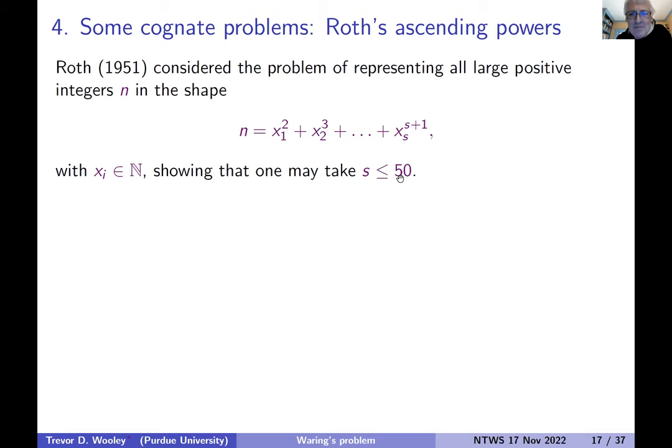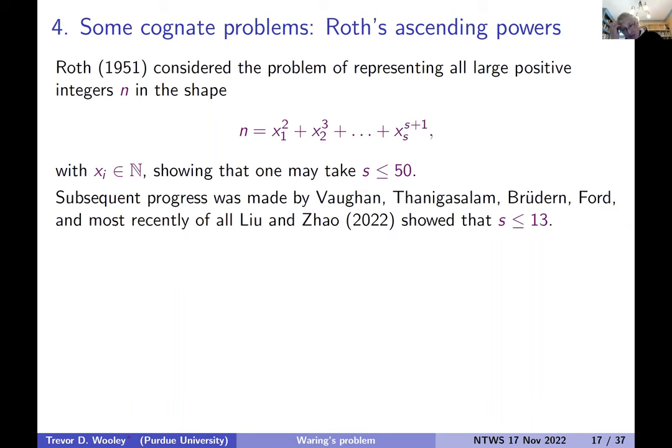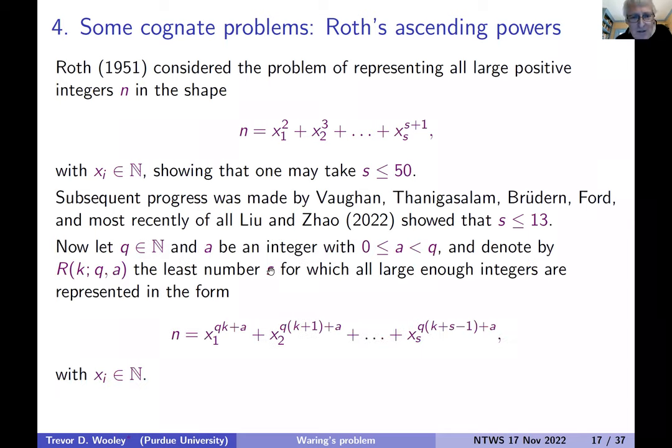And this has been a popular topic for various workers over the years. So Vaughan and Ramachalam and Brüdern and other people have looked at this. And the most recent contribution is due to Lu and Zhao, who showed that you can take s to be at most 30. So I want to jazz this up a little bit. What if you take the summands in an arithmetic progression? So somehow the starting point of the arithmetic progression is kind of a k-th term, kq plus a. And then you just keep adding q every time to the exponent.